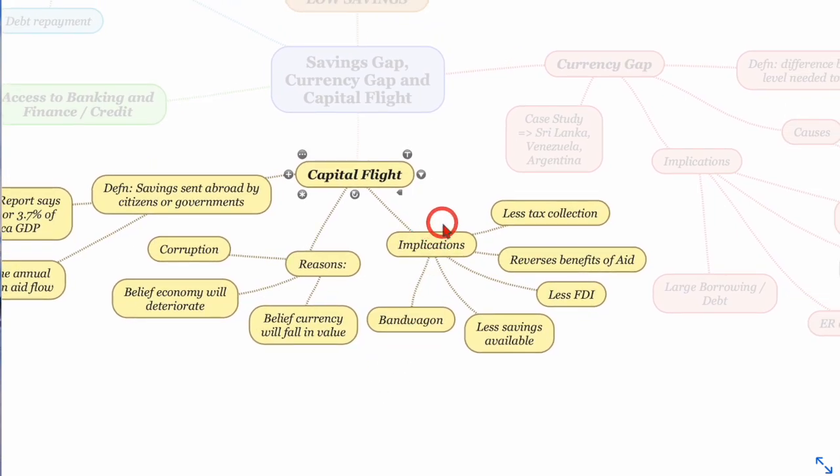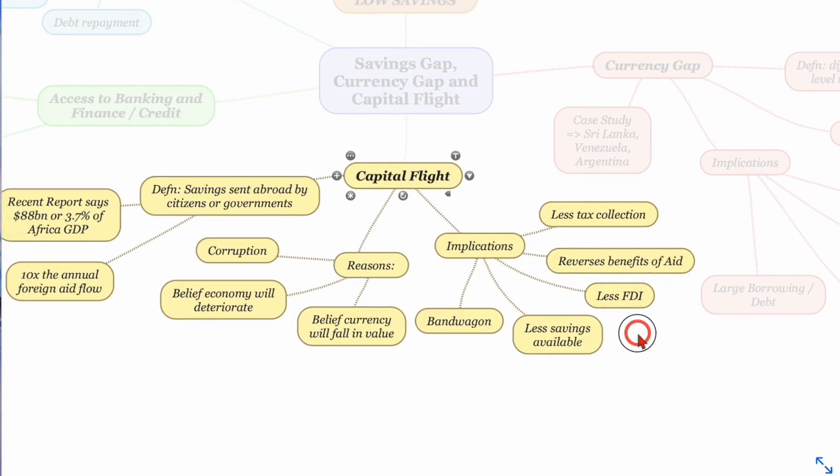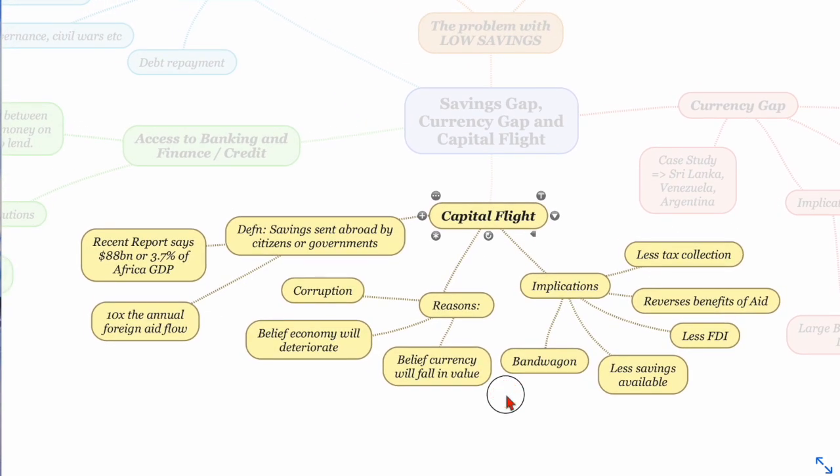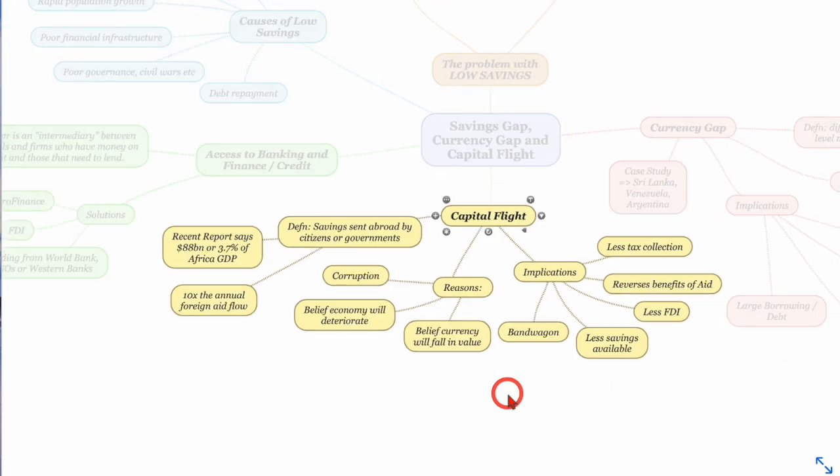But obviously the implications for development is that then the government won't have as much tax to collect. It reverses the benefits of the aid, less foreign direct investment. If you think when you invest in a country that any tax revenue, any profitability from that country going to the country, going to the workers, going to the government, is going to leave the country, then you may not want to invest in that country. Less savings are therefore available, and the bandwagon effect, that once people see one person doing it, then everyone gets in on the bandwagon.